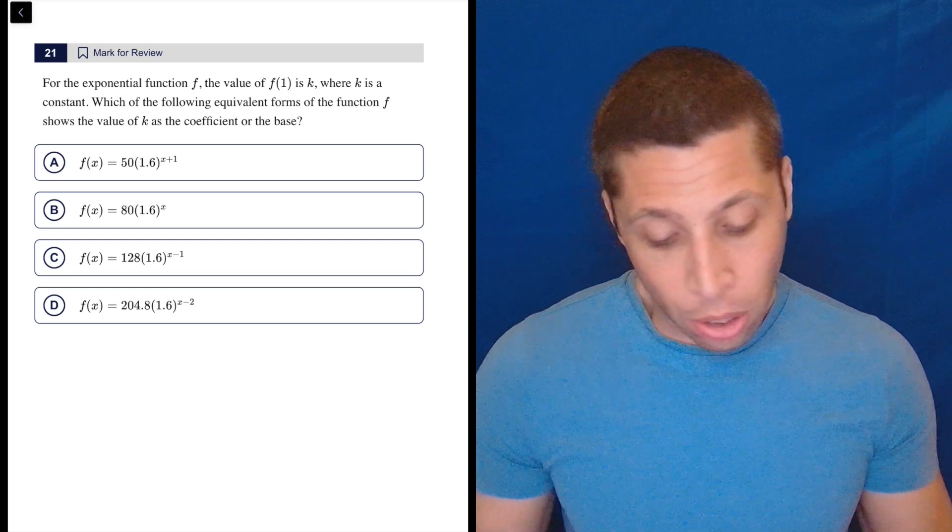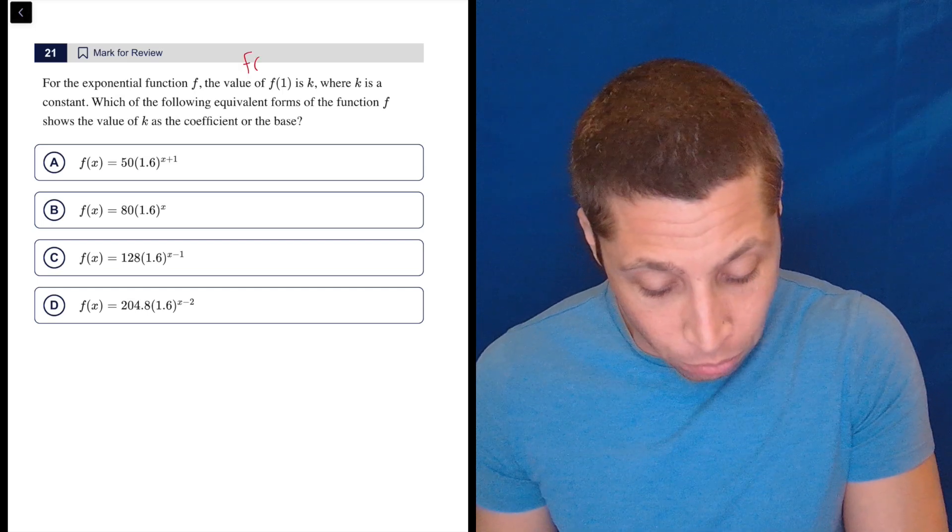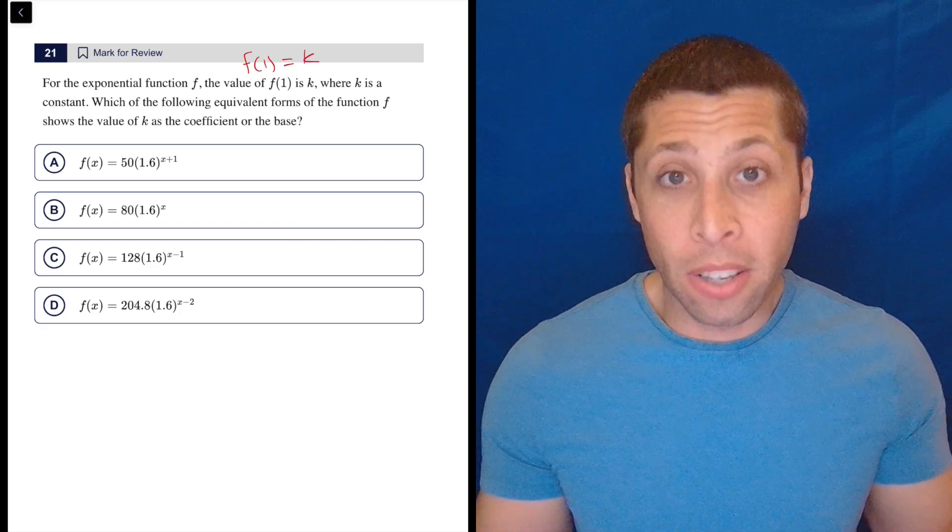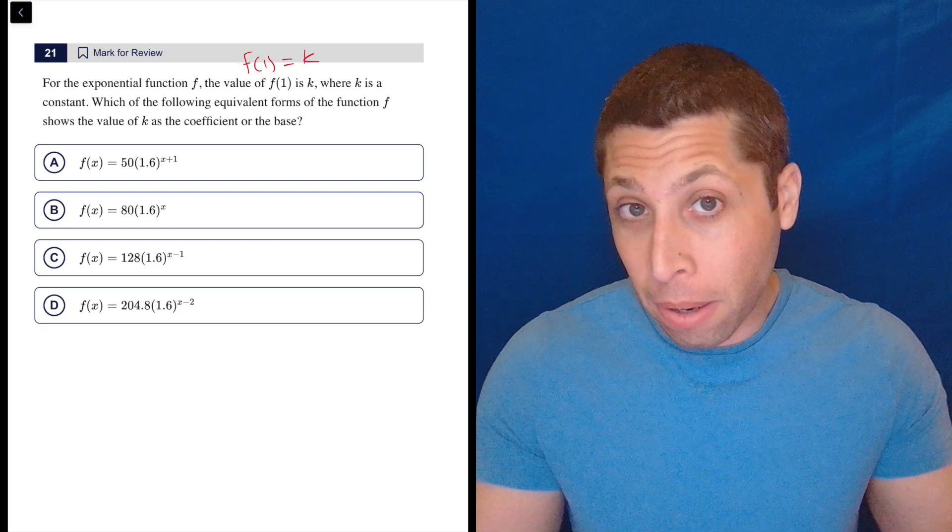The value of f of 1 is k, so that's about as straightforward as it gets. If you do f of 1, you're going to get k, where k is a constant, means it's a number. We don't know the number, but it's a number.